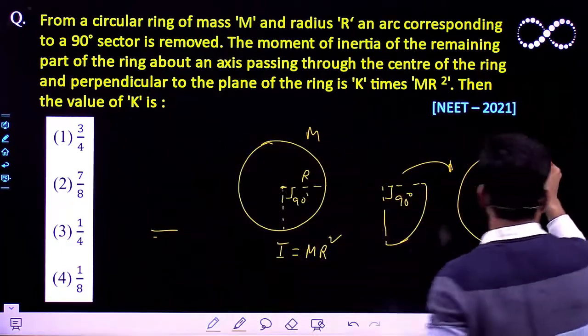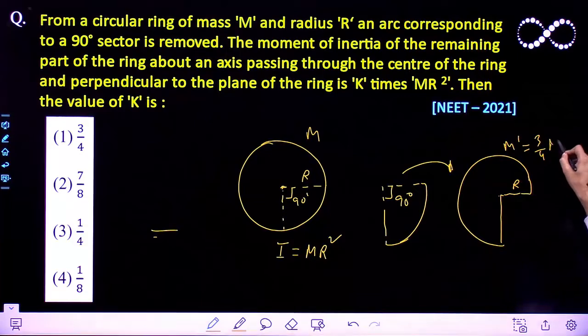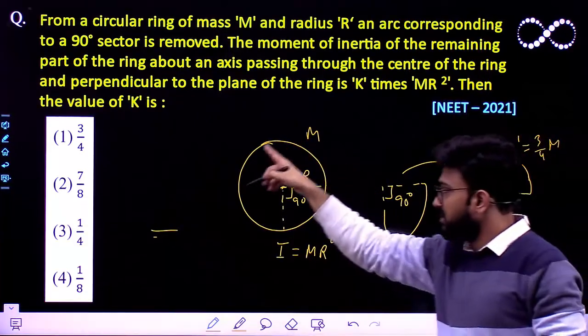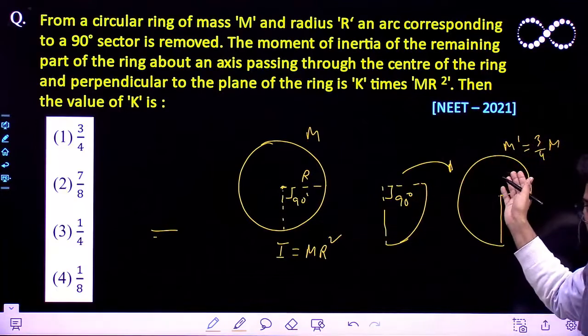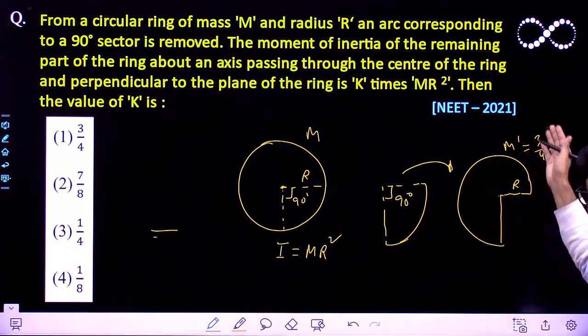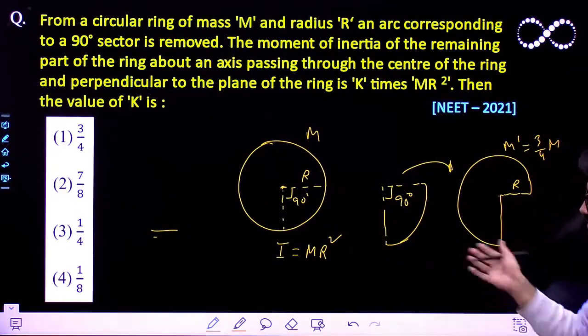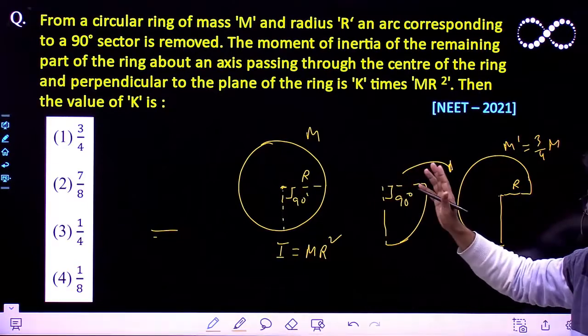The mass should also be M dash equal to 3/4 of total mass, because the total mass of this ring is M and this is nothing but 3/4 portion of this ring. The mass should also be 3/4 of M because there is uniform distribution of mass.